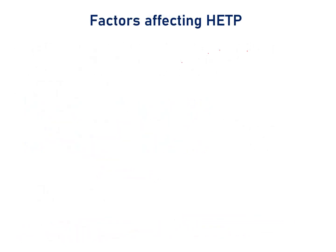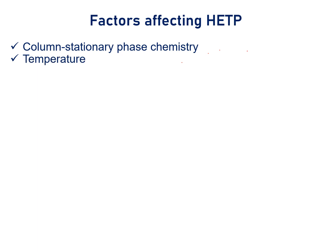Now we will discuss the factors affecting HETP. First, column stationary phase chemistry: if the purity of the stationary phase is high or good, then HETP will be low and the performance of the column will be high. Second, temperature: HETP is inversely proportional to column temperature — higher the column temperature, lower is the HETP, and better is the column.